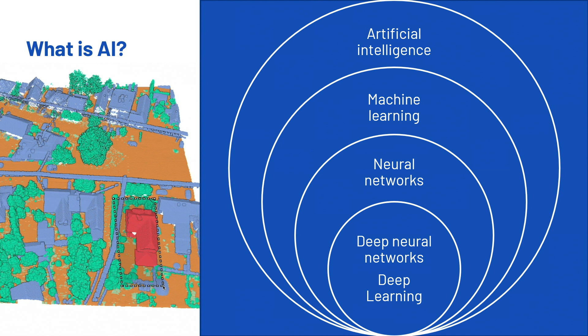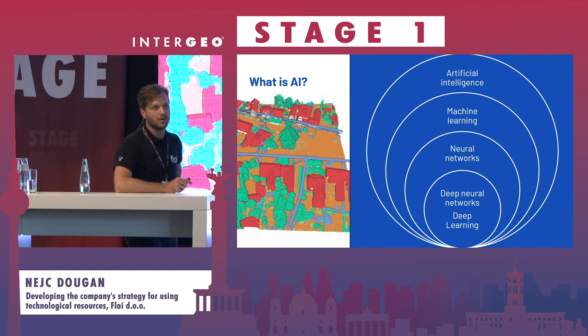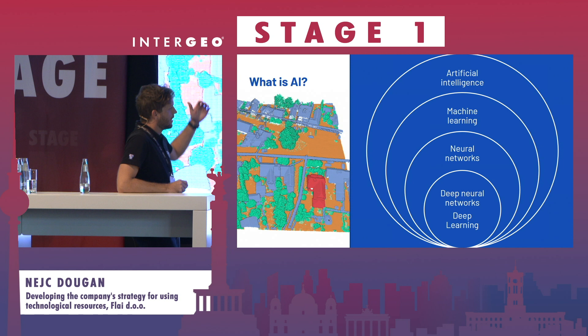Within machine learning there is a variety of different tools and algorithms. The most state-of-the-art ones these days are based on neural networks with multiple layers — deep neural networks and deep learning. Most of the use cases we will be looking at today have been done using deep neural networks and deep learning.